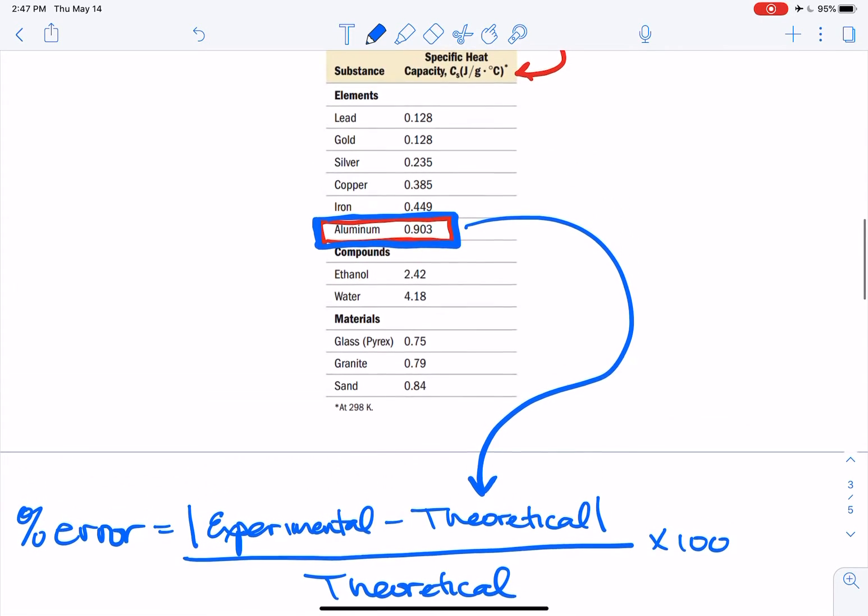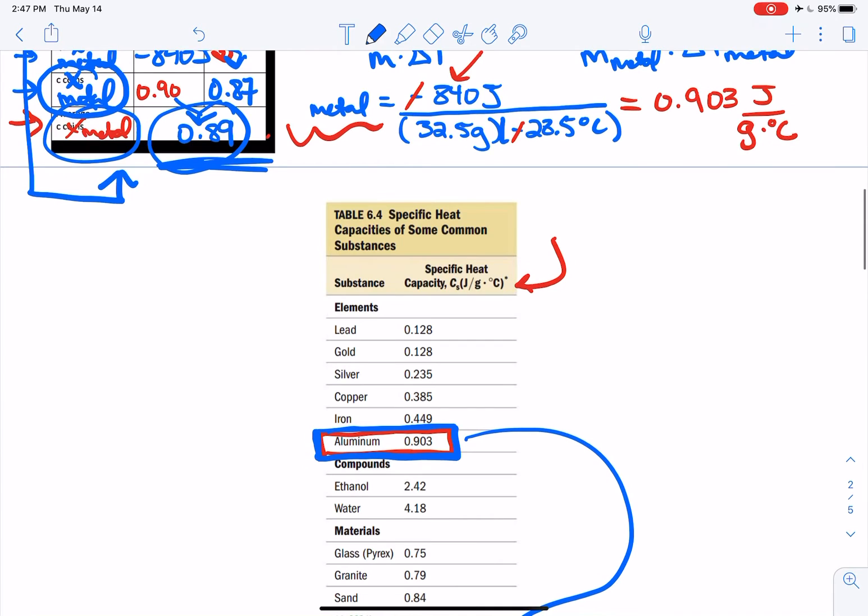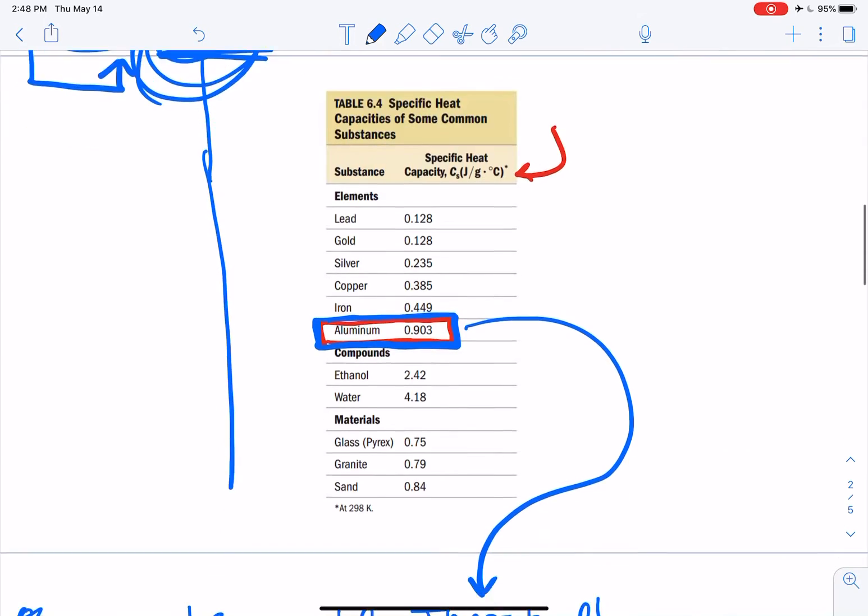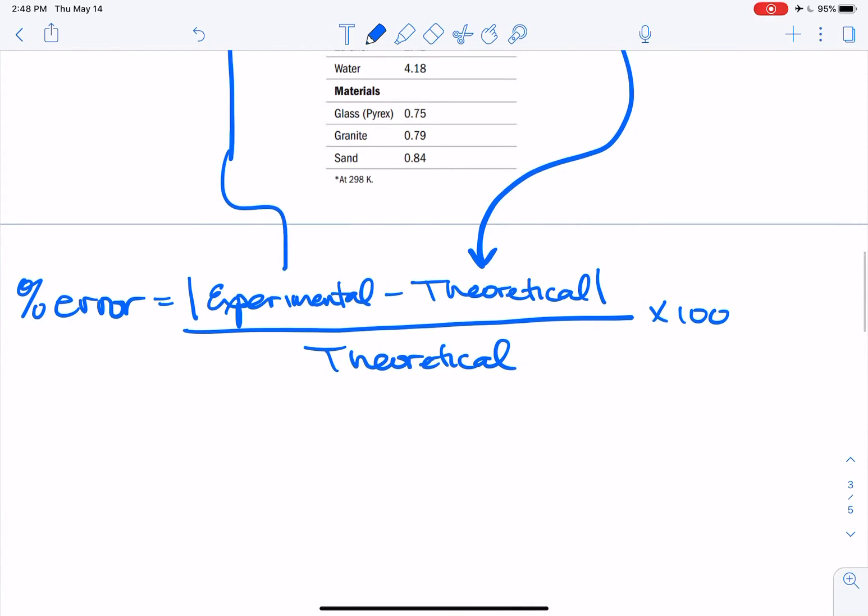Now experimental, that's what you got in your experiment. So 0.89, we're gonna move it on down here and that's what we would put there. And then we're gonna put the theoretical value again on the bottom, which is weird for a lot of students but that's how we do it, and multiply it by 100.